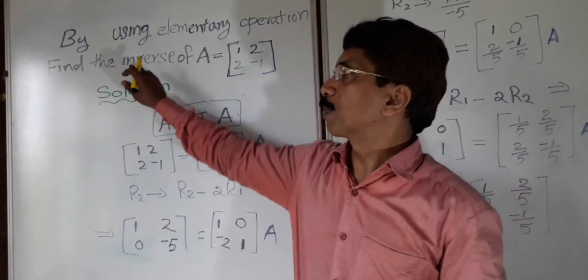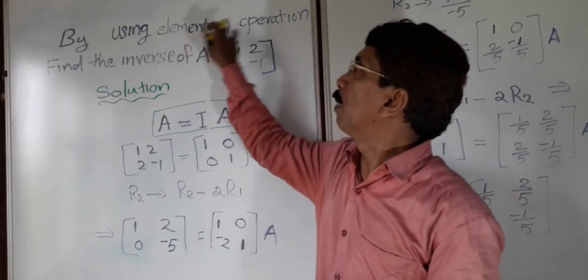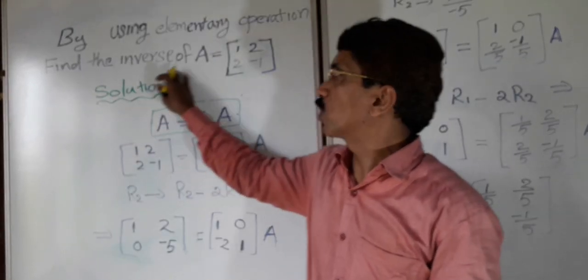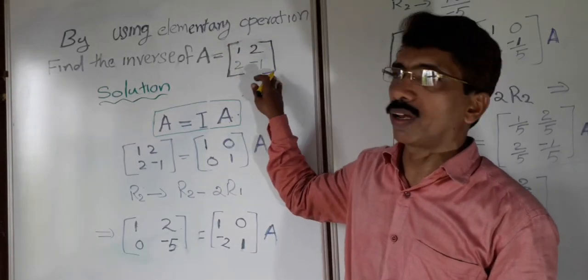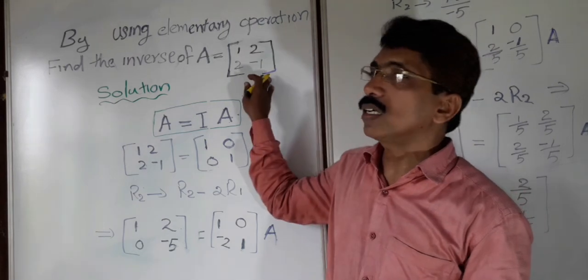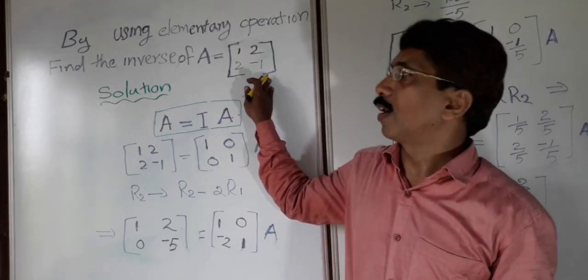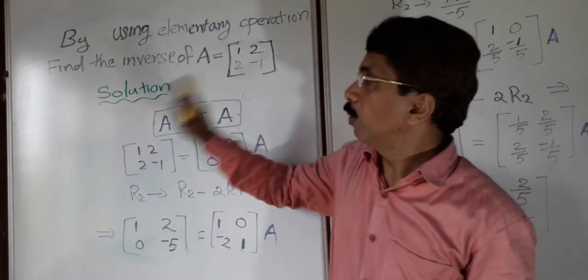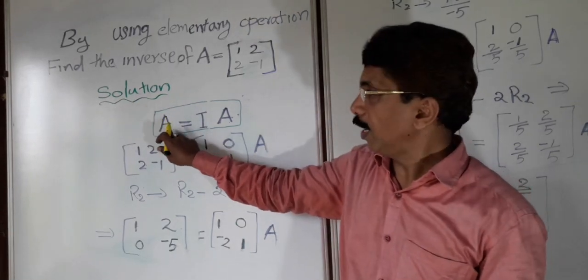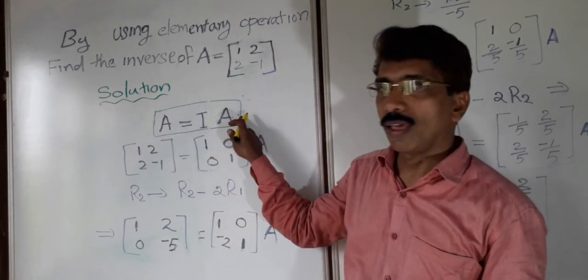Next, we will move to the next problem. By using elementary operations, find the inverse of A equal to the matrix [1, 2; -1, 2]. We have to find the inverse of this matrix using elementary operations. For that solution, I need to write A equals IA.